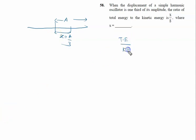Total energy is always constant in SHM, that is half k A squared. Potential energy is given by half k x squared, so it is half k times (A/3) squared, which means A squared by nine.